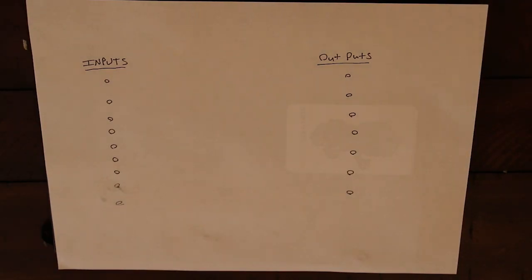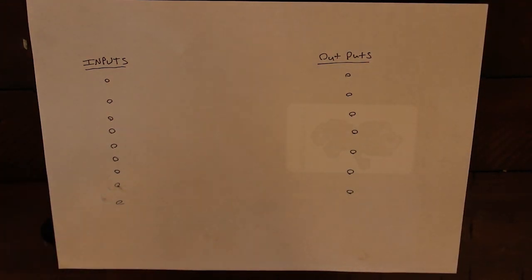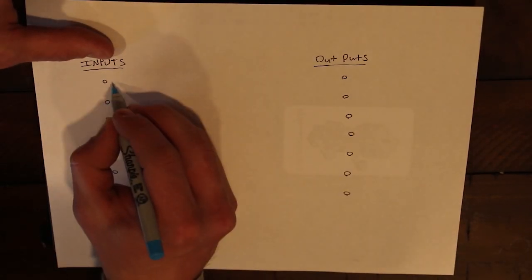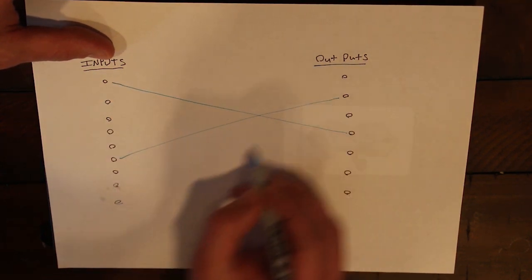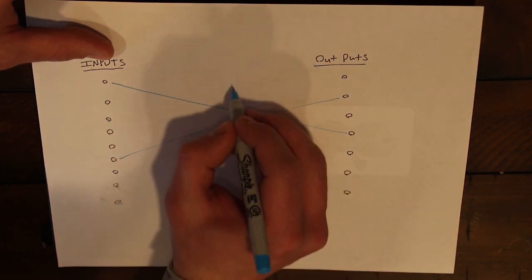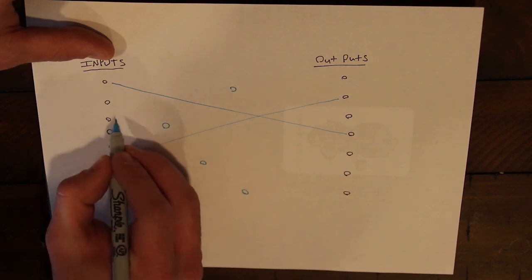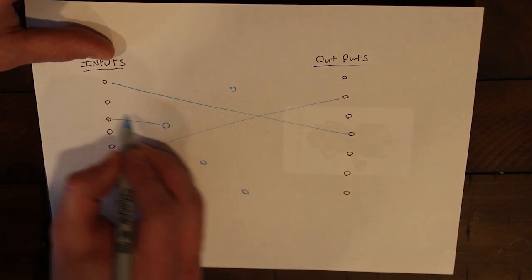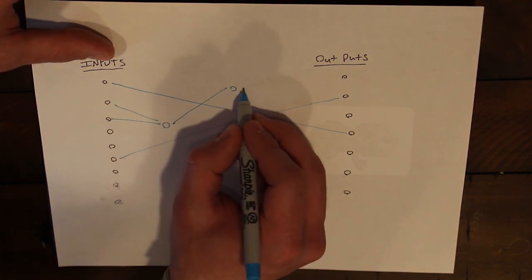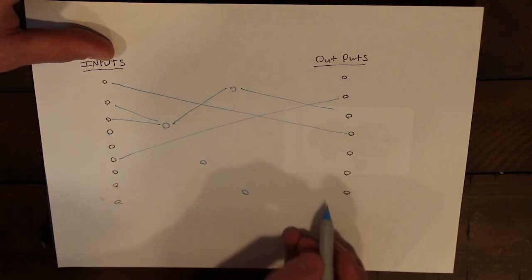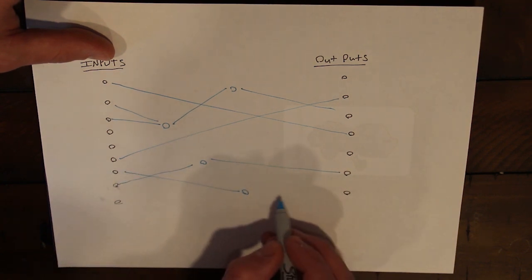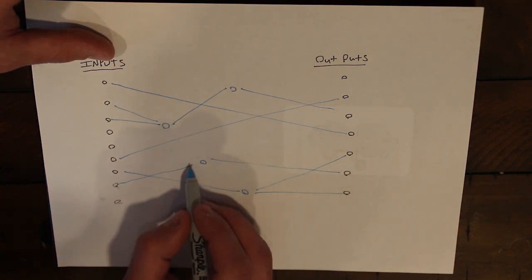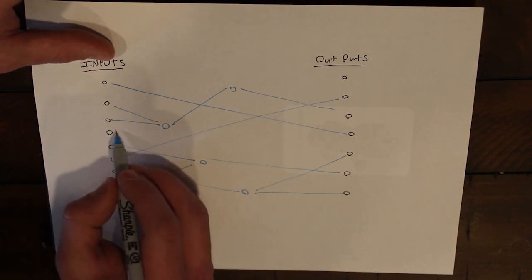So we've got our inputs and outputs that all neural nets have. Over time, of course, we have connections that generate. As the generations evolve, they add even more and more connections, making it extremely complex over time. Unfortunately, due to the limitations of API Gateway for AWS, I can only send so much data through there at once before it starts giving me a 413 error.